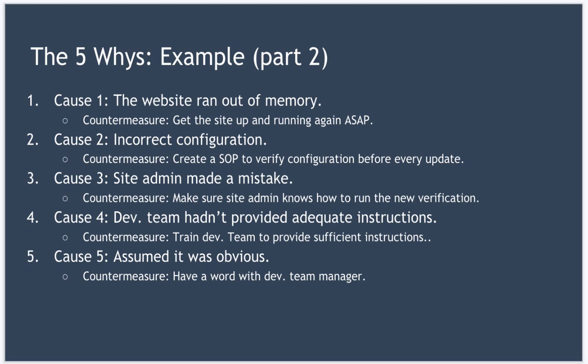The third cause was that the site admin made a mistake, so the countermeasure is to make sure the site admin knows how to run the new verification test. The fourth cause was that the development team hadn't provided adequate instructions, so the countermeasure is to train the development team to provide sufficient instructions. And our final root cause — they assumed it was obvious — so the countermeasure is to have a word with the development team manager to ensure they speak to their team about the importance of being precise, no matter how obvious something may seem.